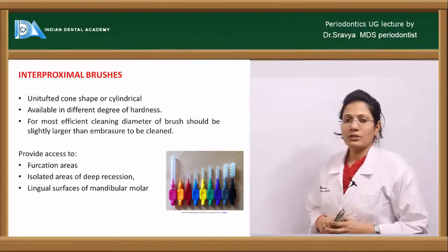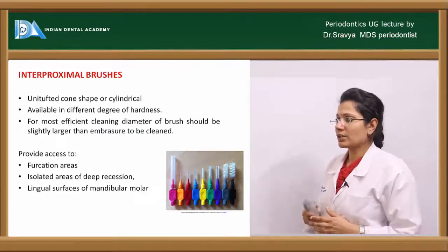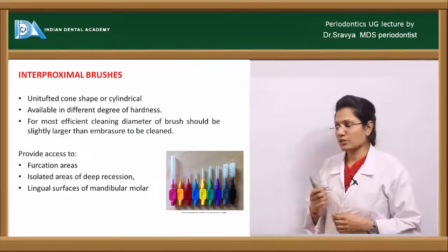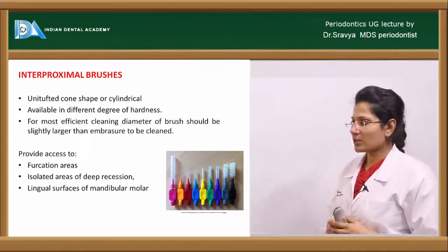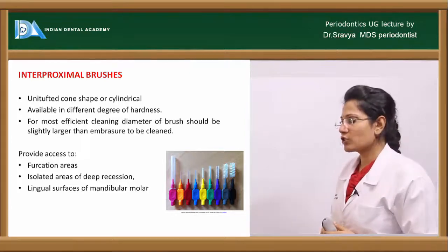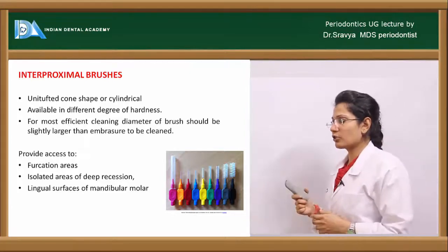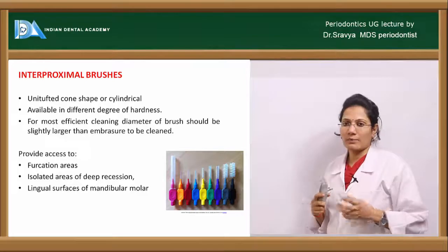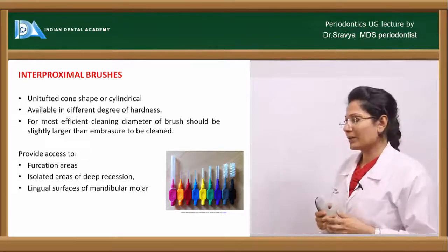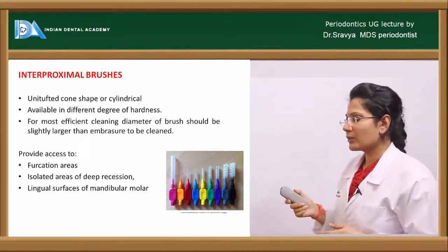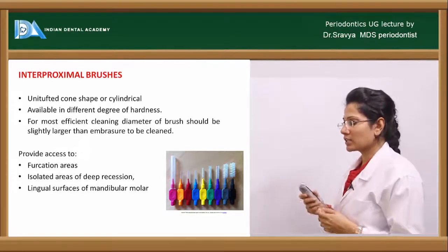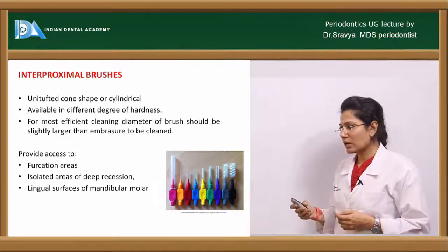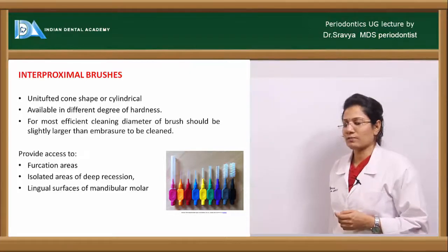Interproximal brushes are unitufted, cone-shaped, or cylindrical and are available in different degrees of hardness. For most efficient cleaning, the brush diameter should always be slightly larger than the embrasure to be cleaned. They provide access to furcation areas, isolated areas of deep recession, and lingual areas of the mandible.